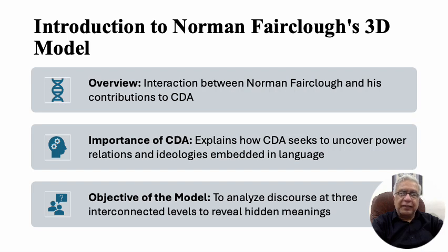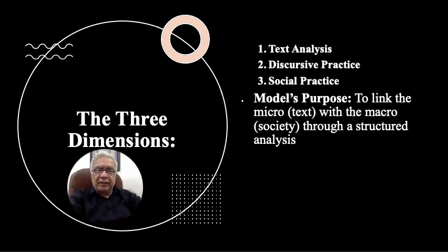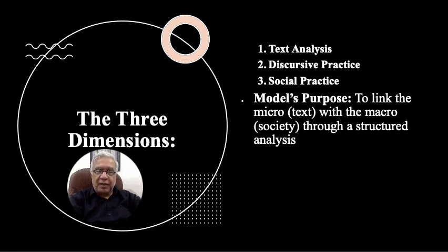The objective of this analysis is to see how these three areas — called three-dimensional or 3D — are interconnected with each other, and what hidden meanings arise from their connection. The 3D model has three components: text analysis, discursive practices, and social practices. The purpose of this model is to link the micro, which is actually the text, with the macro, which is actually society, through a structured analysis.